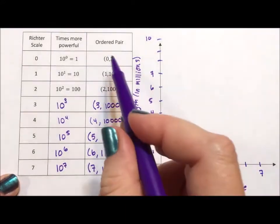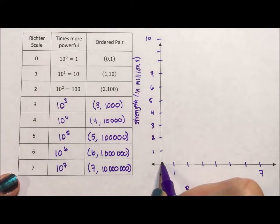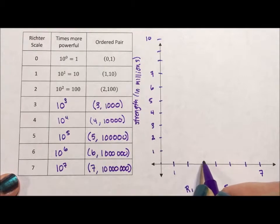Now, it doesn't seem to make sense for these numbers. 0, 1 is barely on the graph and 1, 10 is barely on the graph and 2, 100 and 3, 1,000 and 4, 10,000.